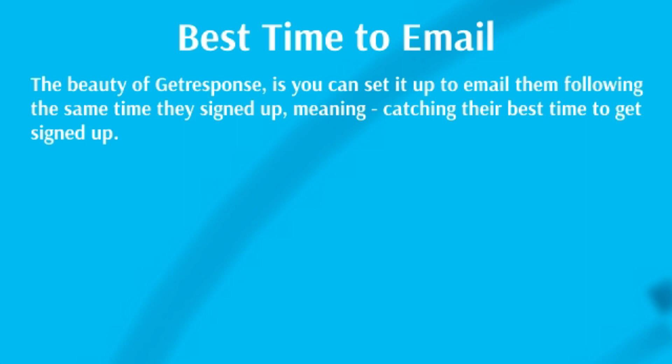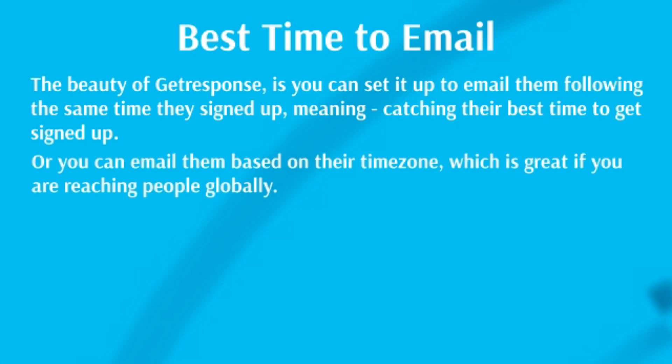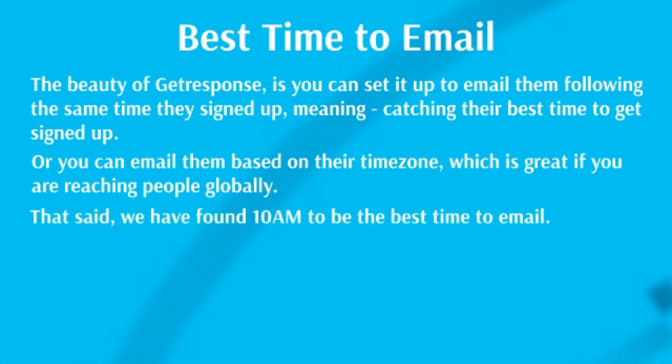For example, if a subscriber signed up on Wednesday at 3 p.m., GetResponse can detect that and you could set it to email them every day at 3 p.m. or every week on Wednesday at 3 p.m. You can also set it up so they receive an email every day, every other day, or with custom gaps. You can even restrict emails to Monday through Friday and skip Saturday and Sunday — useful for local businesses or audiences not available on weekends.